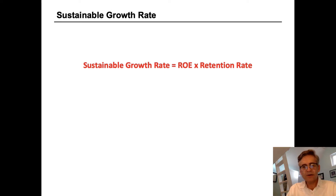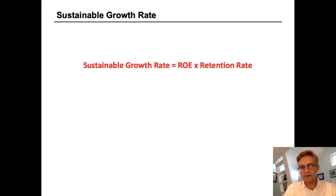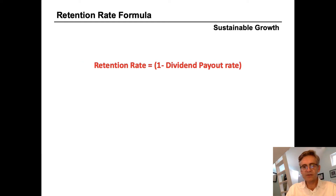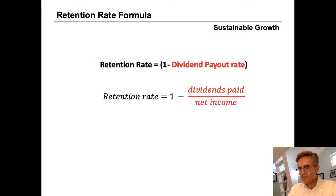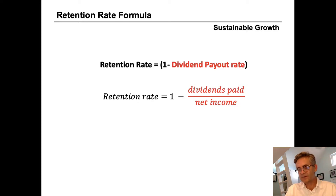We already know how to deal with the first part of this equation: return on equity, which is simply net profit divided by total equity. Now we'll turn our attention to the retention rate portion of this equation. The formula for retention rate is 1 minus the dividend payout rate. This formula shows us what proportion of net income the company is retaining in the firm. The retention rate is the complement of the dividend rate, which is the proportion of net income or earnings that is being paid out to shareholders.